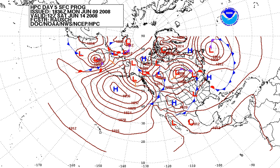Atmospheric pressure varies widely on Earth, and these changes are important in studying weather and climate. See pressure system for the effects of air pressure variations on weather. Atmospheric pressure shows a diurnal or semidiurnal cycle caused by global atmospheric tides. This effect is strongest in tropical zones, with an amplitude of a few millibars, and almost zero in polar areas. These variations have two superimposed cycles: a circadian cycle and a semi-circadian cycle.